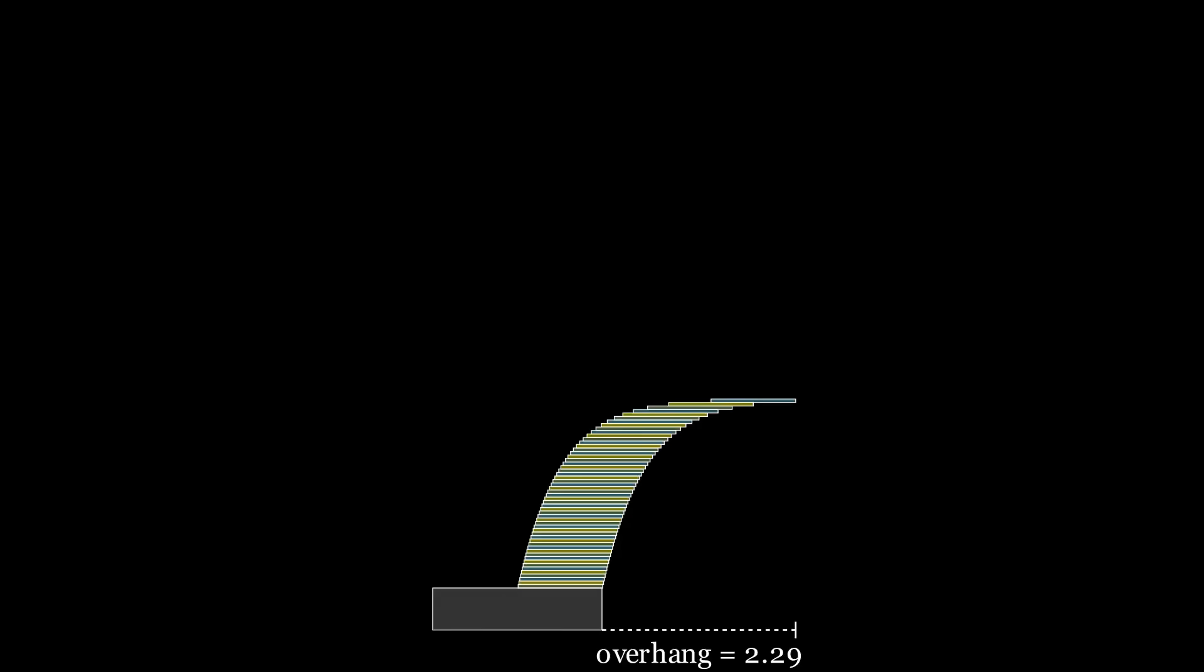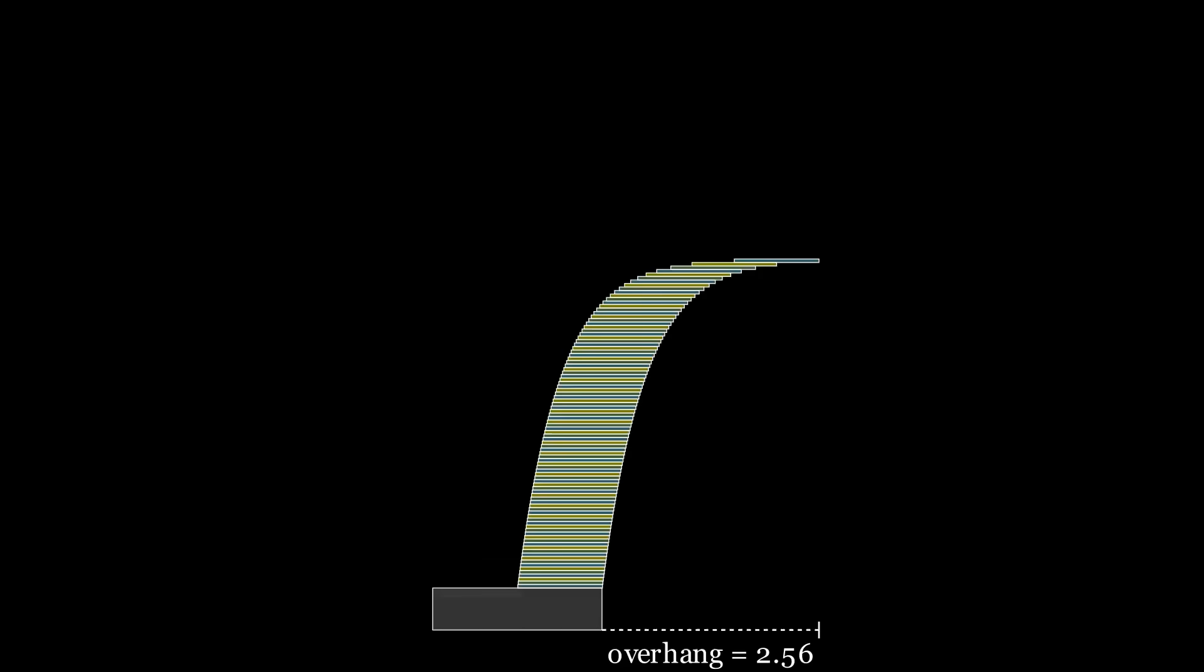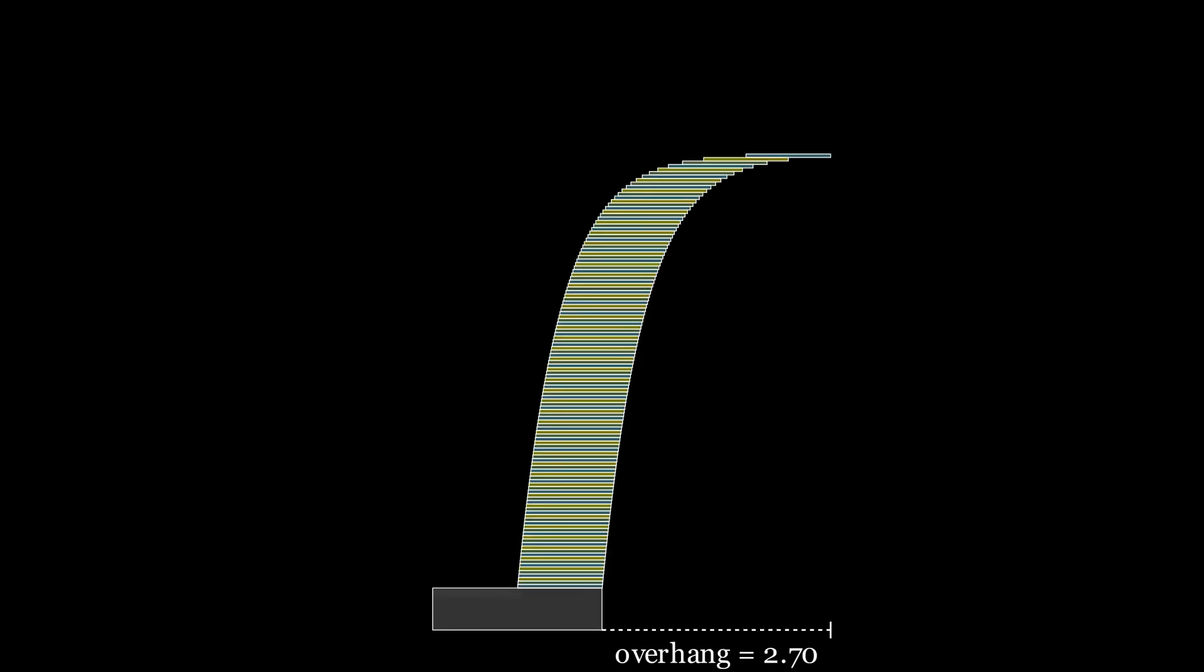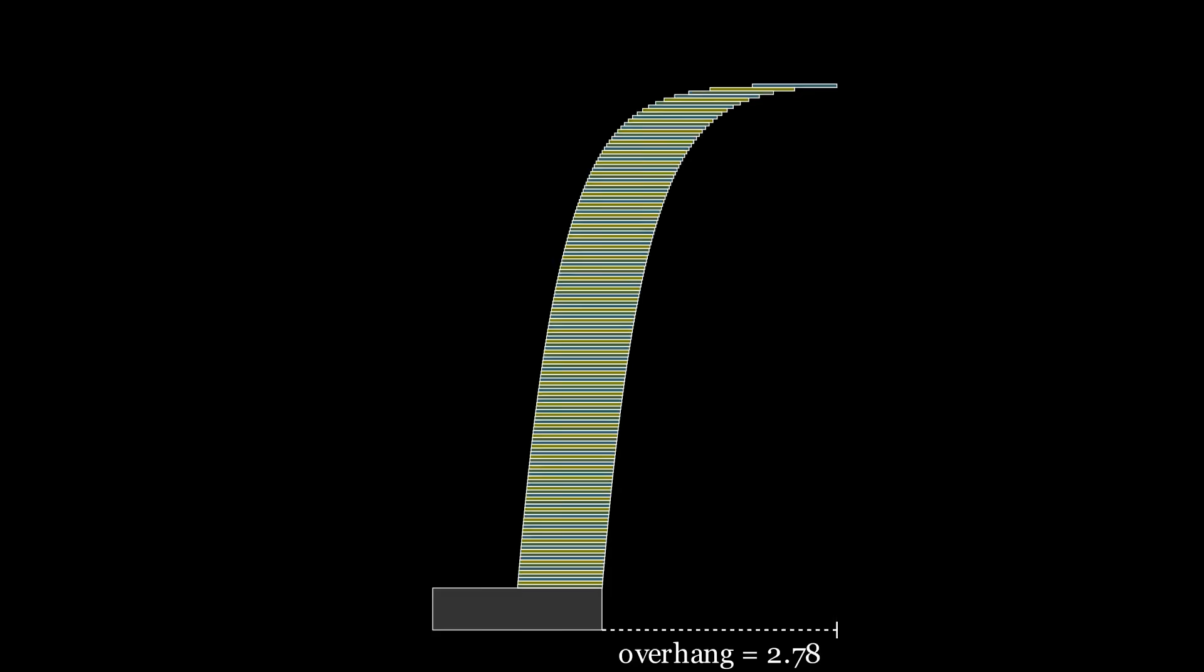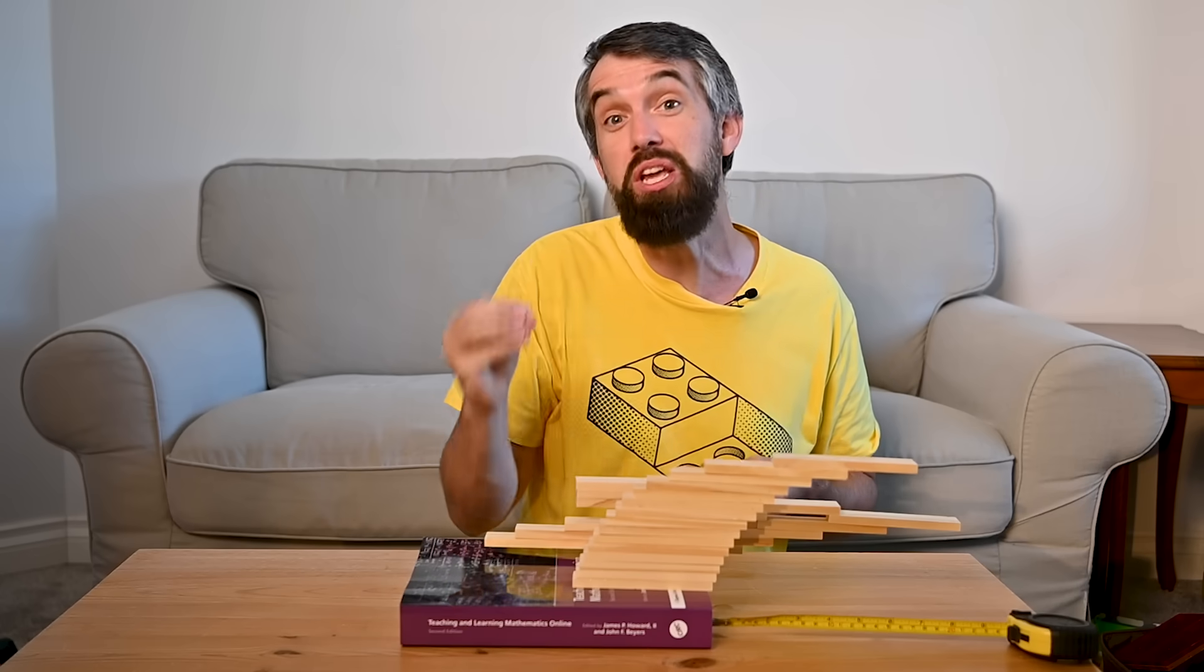If I wanted this to overhang 10 blocks to the right, I would need a stack that was over 20,000 blocks tall. Or if I wanted to go only 800 blocks to the right, I would need a stack that was 10 to the 43 blocks tall.